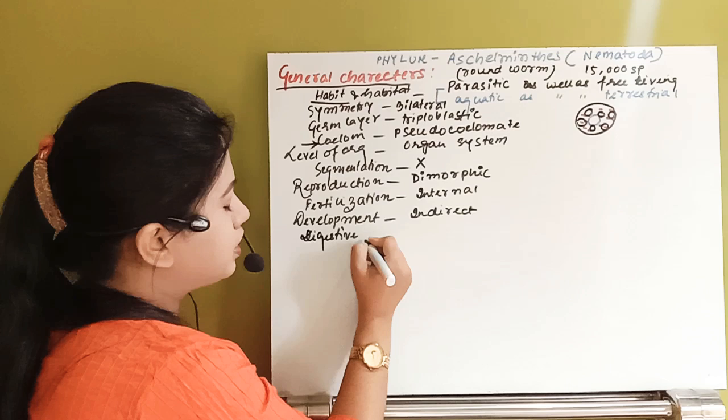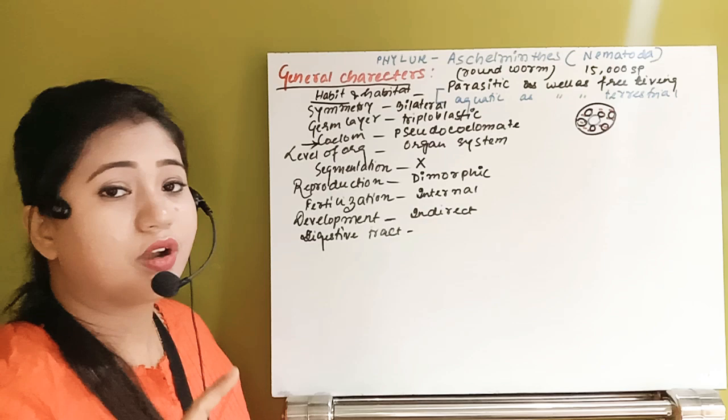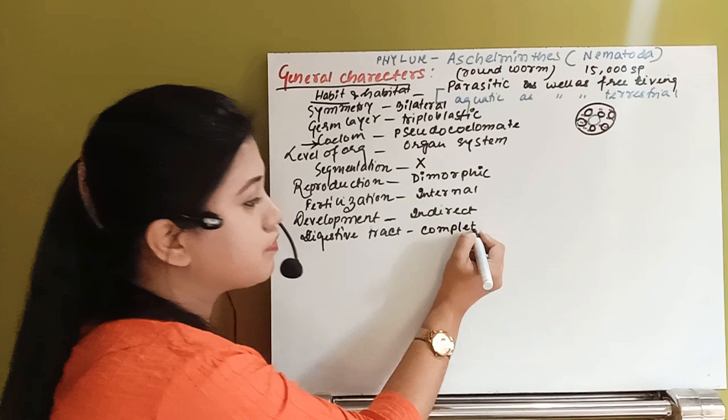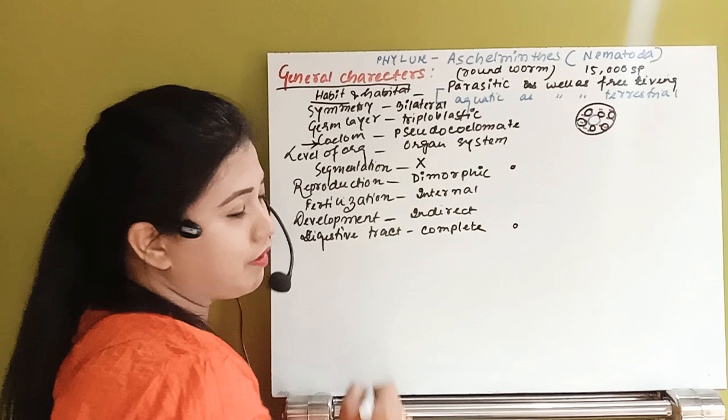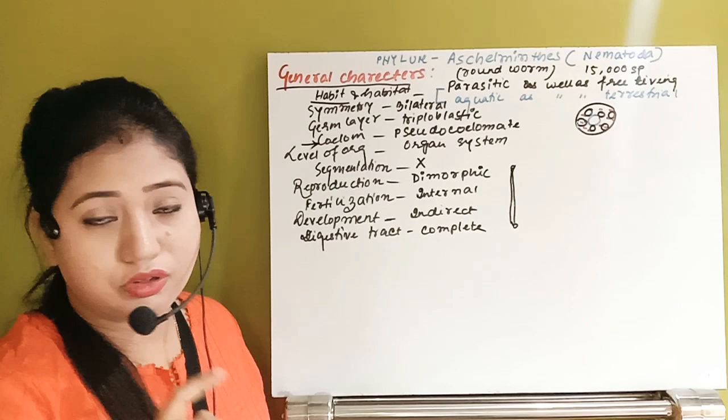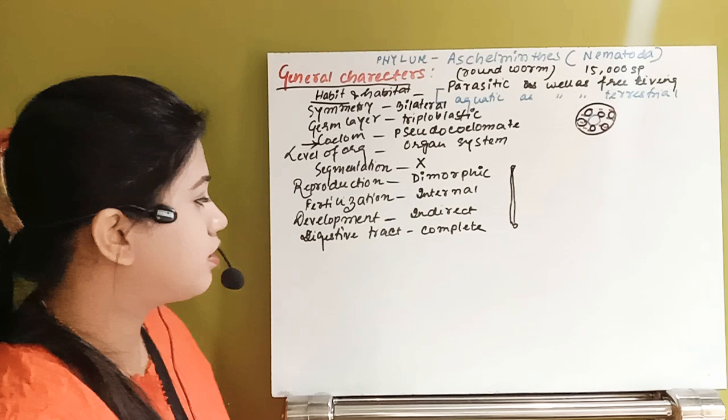Regarding the digestive system, for the first time these organisms have a complete digestive tract — meaning they have a mouth, an anus separately, and an alimentary canal connecting them.